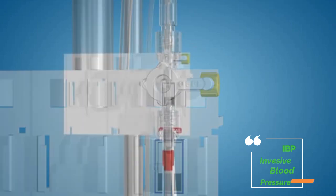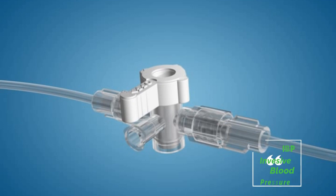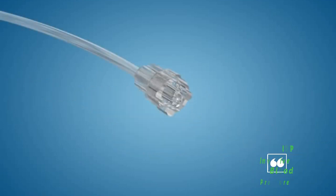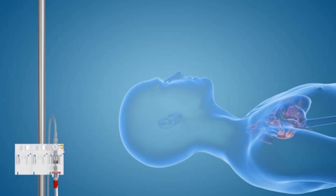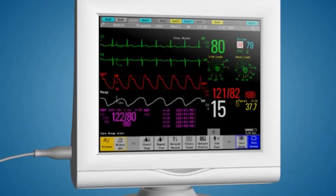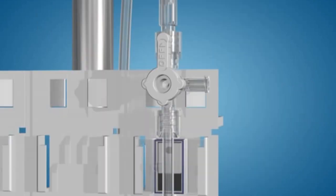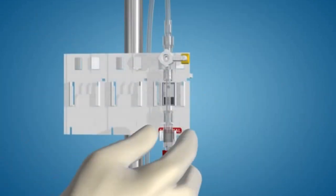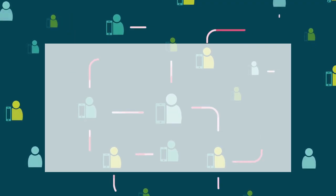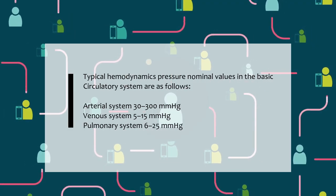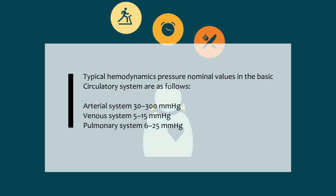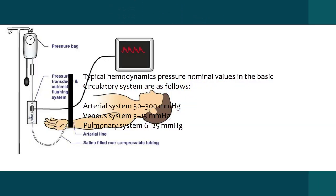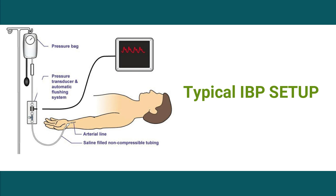The maximum pressure reached during cardiac injection is called systolic pressure, and the minimum pressure occurring at the end of ventricular relaxation is termed diastolic pressure. The mean arterial pressure over one cardiac cycle is approximated by adding one-third of the pulse pressure to the diastolic pressure. All blood pressure measurements are made with reference to atmospheric pressure.